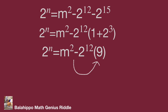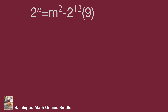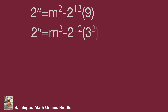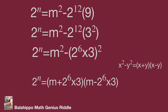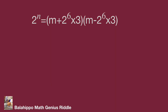Comparing to m squared, we have square items on the right side. So 2 to the power of n equals m squared minus 2 to the power of 12 times 3 squared, which equals m squared minus the quantity of 2 to the power of 6 times 3, squared. Therefore, utilizing the formula x squared minus y squared equals (x plus y)(x minus y), it becomes 2 to the power of n equal to the quantity m plus 2 to the power of 6 times 3, multiplied by the quantity m minus 2 to the power of 6 times 3. These are factors of 2 to the power of n, so they are each a power of 2.